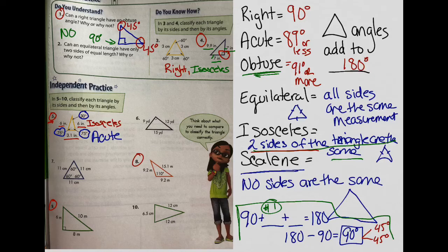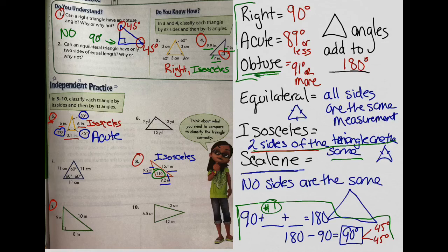Example eight has sides of nine and two-tenths, nine and two-tenths, and 15 and one-tenth meters. Once again, two sides are the same and one is different, so this is isosceles. Now for the angles: there's no box, so no right angle, but one angle given is 110 degrees. It's not a right angle since it's not 90. 110 is greater than 89, and obtuse means 91 degrees or more, so this is an isosceles obtuse triangle.